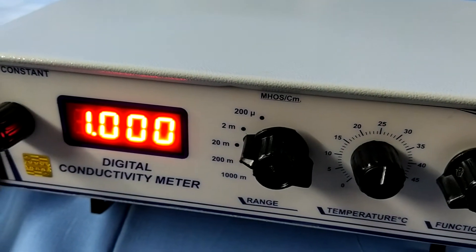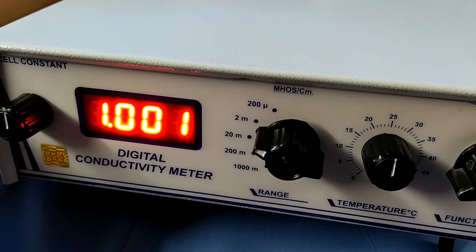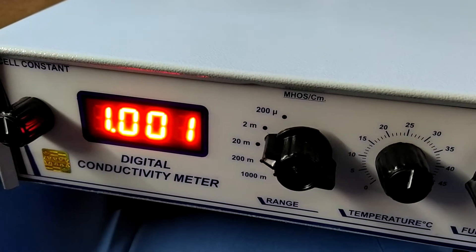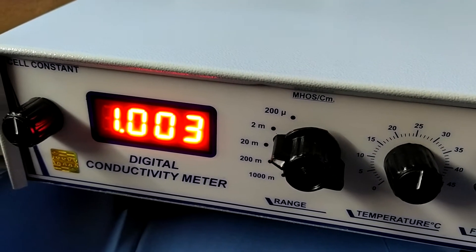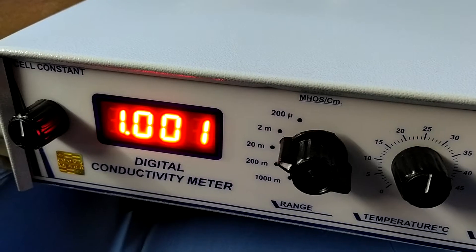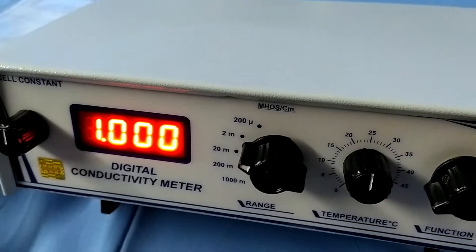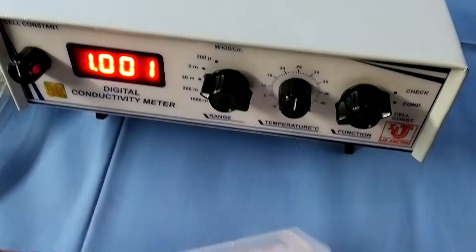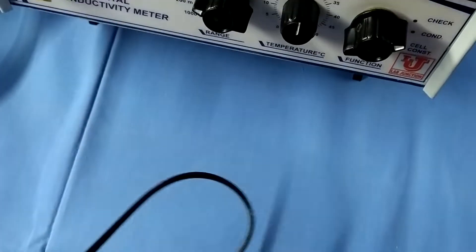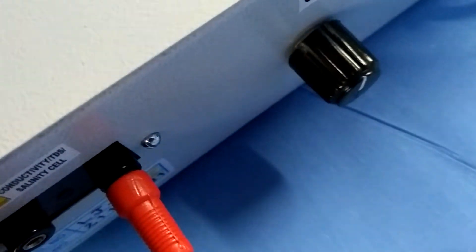Okay. Suppose this is blinking. Again, you can set that there. Now, I am connecting Conductivity Cell to our Digital Conductivity Meter. Like this way.